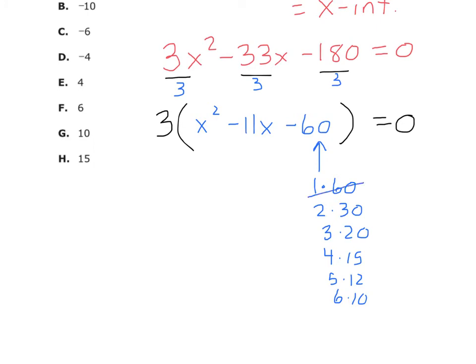Well, 1 and 60 won't add to be negative 11, will it? Because 60 minus 1 is 59. 30 minus 2 won't work. 20 minus 3 gives us 17, not 11. But now 15 minus 4 will do it, won't it? Well, negative 15 plus 4, right?